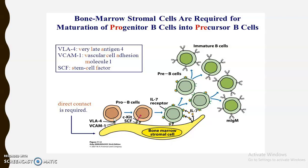Here the pro B cell interacts with the bone marrow stromal cell via VLA4, very late antigen 4, and VCAM1, vascular cell adhesion molecule 1. After this interaction, we can see the second interaction between C-kit and SCF, stem cell factor. This interaction produces a signal, activates C-kit, and converts the pro B cell into a pre B cell.